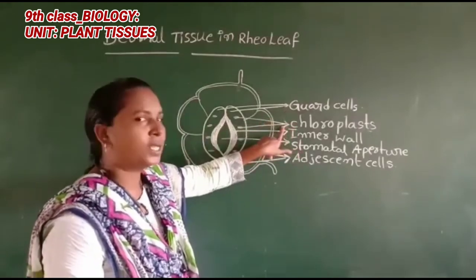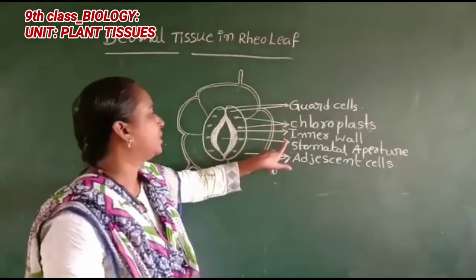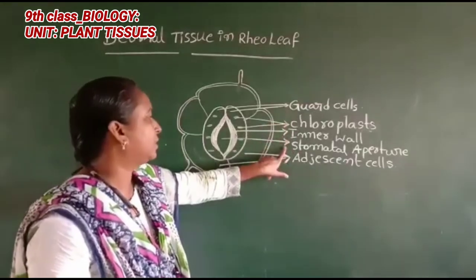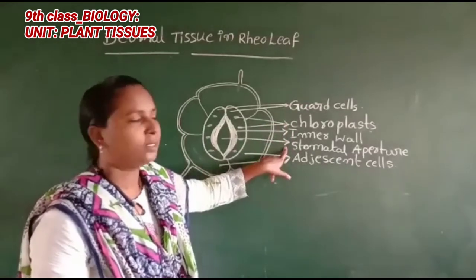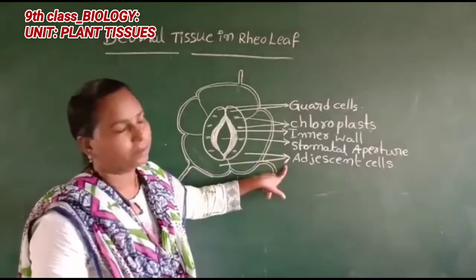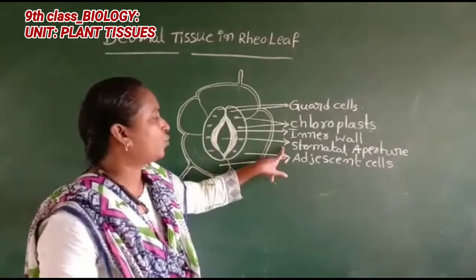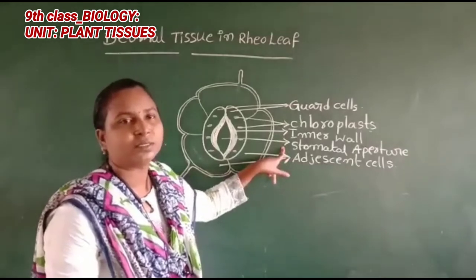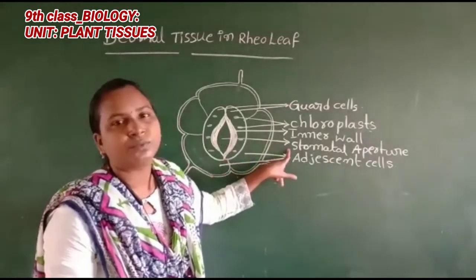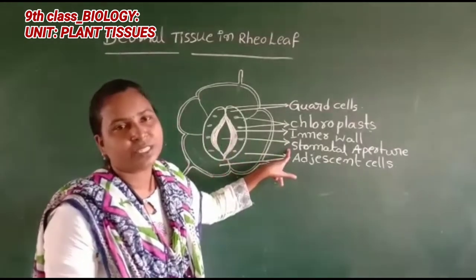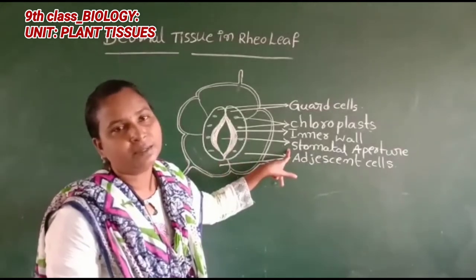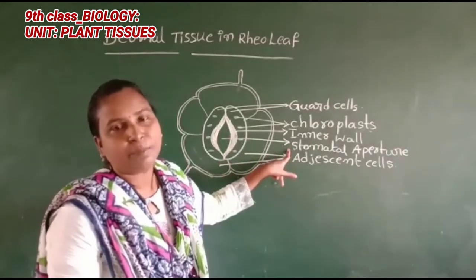The labeled parts are: Number 1 — guard cells; Number 2 — chloroplasts; Number 3 — intervals; Number 4 — stomatal aperture; Number 5 — heterosal cells. This stomatal aperture is used for gaseous exchange and water exchange in the dermal tissue.